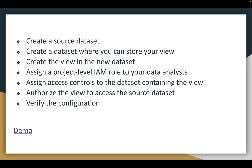We are going to do this step by step. First, we are going to create a source dataset. Next, we are going to create a dataset where we can store our view. Then we are going to create the view in the new dataset, assign a project-level IAM role, assign access controls, authorize the view to access the source dataset, and finally verify the configuration.